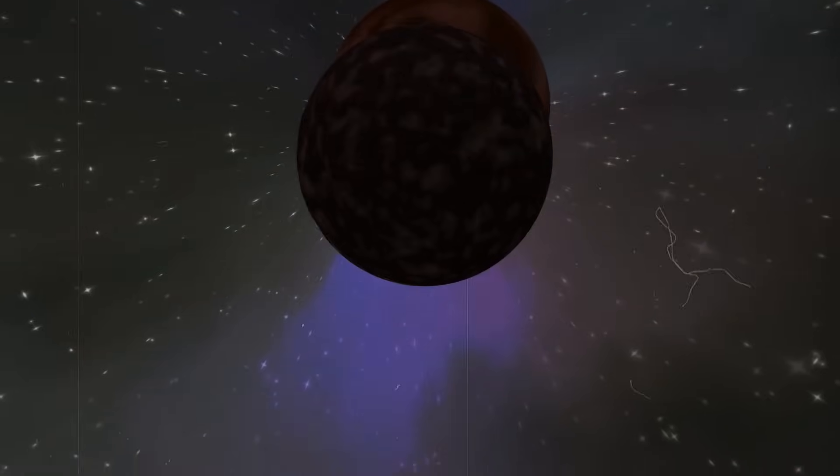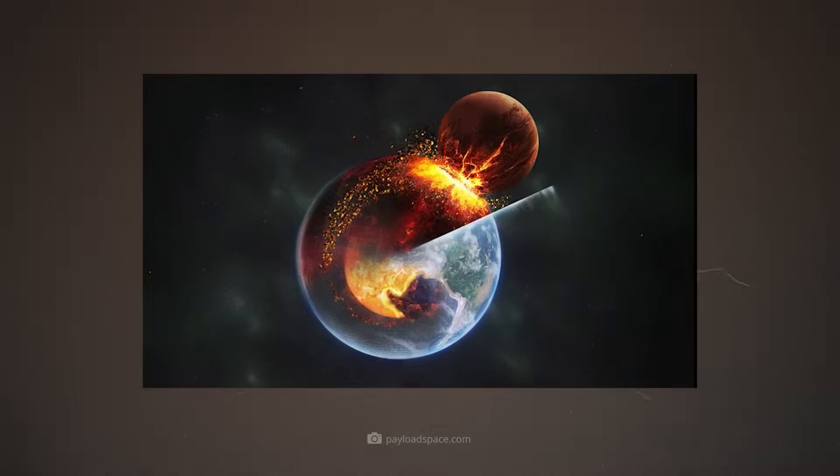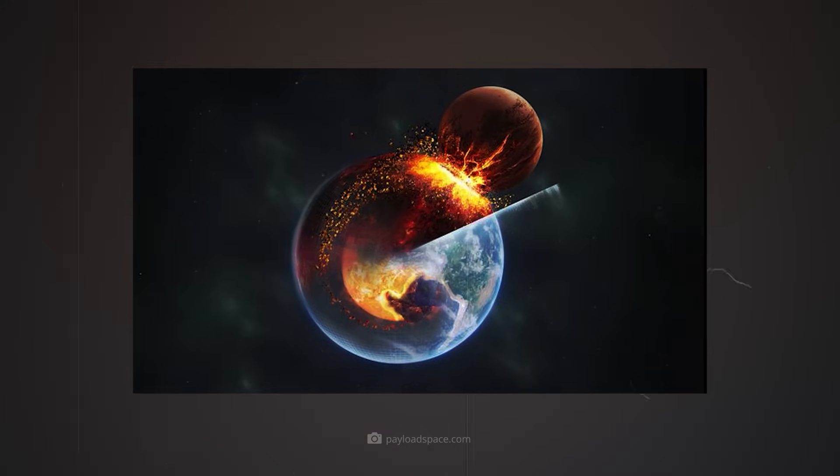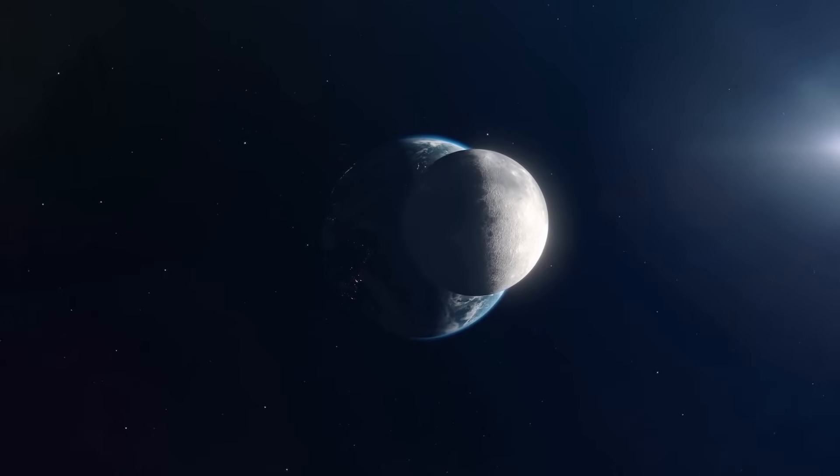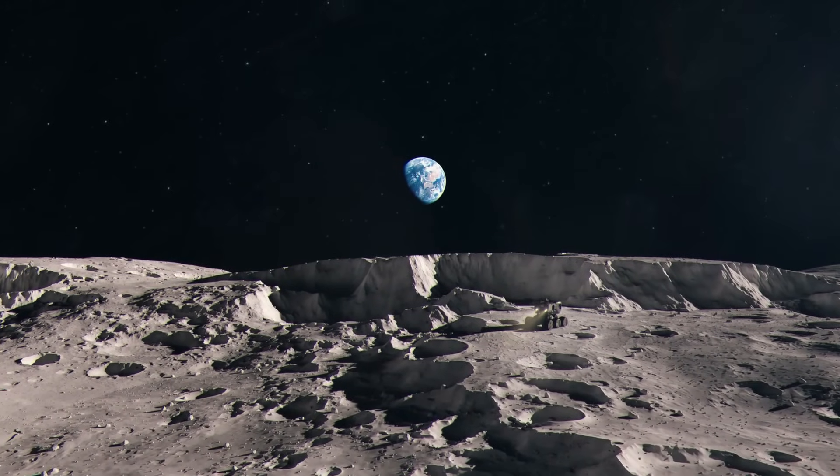However, the two celestial bodies did not collide head-on but at an angle, causing much of Theia and parts of the Earth's crust and mantle to vaporize, and then condense again in orbit around the Earth. There, the material clumped together under the influence of gravity and eventually formed the Moon.